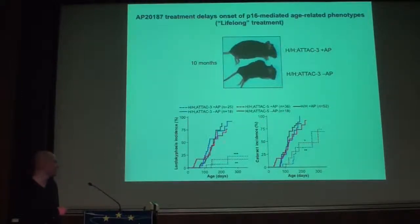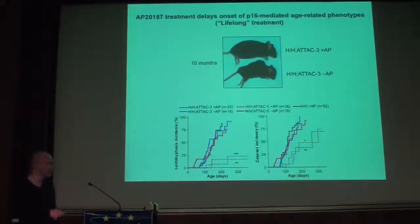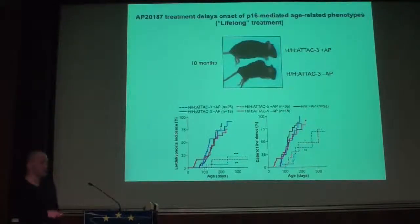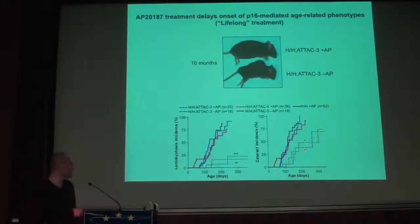Untreated hypomorphic animals without the ATTAC construct but with drug indicate that treatment requires both the ATTAC transgene and the drug. Another phenotype is cataract incidence — again, treated animals with ATTAC clearly show a delayed onset of cataracts as well.